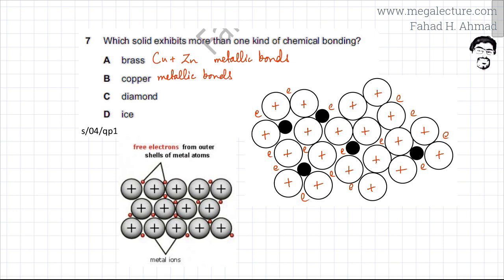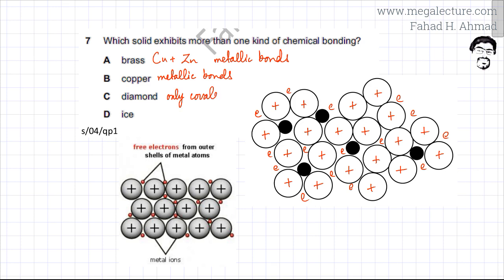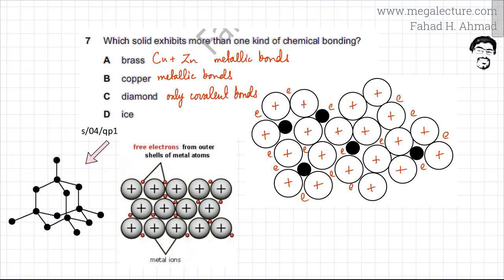Moving to diamond: diamond is a giant covalent structure where only covalent bonds are present. In the structure, each carbon forms four single bonds with other carbon atoms, which in turn form four bonds with further carbon atoms. This continues endlessly, forming a giant tetrahedral structure — so only covalent bonds are present in diamond.